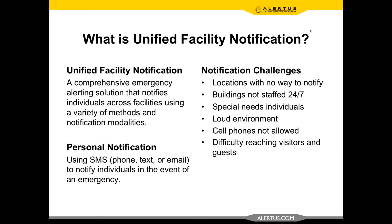So what is unified facility notification? It is a comprehensive emergency alerting solution that notifies individuals across facilities. We're sending the message to the facility — anybody that's in the building, whether or not they have a cell phone to receive text messaging or pushes from the local municipality. If you can deliver that message to the building, you're going to hit everybody in those buildings. This is very different than personal notification, which sends out SMS, phone calls, or email to individuals whose location you're not sure of. Facility notification works in concert with personal notification to notify both those on campus and those off campus as well.